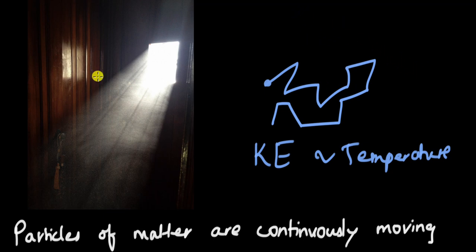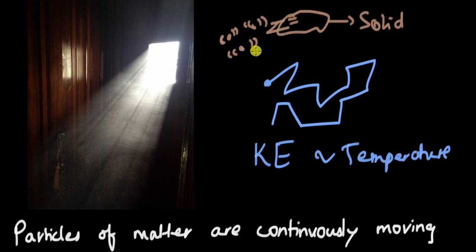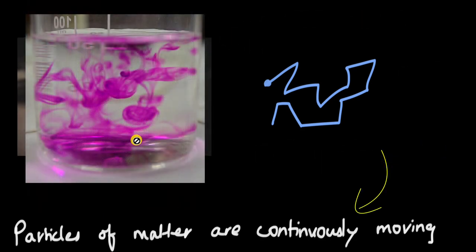If you think about a solid, like a piece of stone, particles aren't really moving the way they do in fluids — that is, gases or liquids. But particles are still vibrating at their positions. If you zoom in, that is how the particles will behave — they are still vibrating. If you increase the temperature, they will vibrate even faster. This is the reason why potassium permanganate starts moving around in water: every particle of potassium permanganate is striking a particle of water, helping it mix and spread throughout the body of the water.